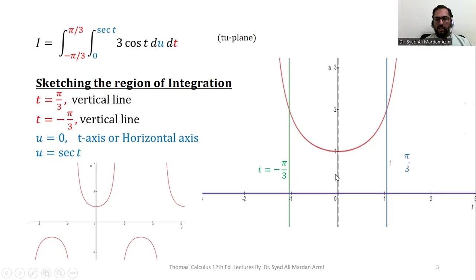This blue line is for—this green line is for t equals minus π/3. This blue line is t equals π/3, a vertical line.